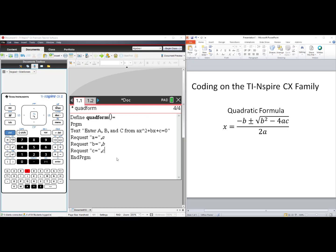Repeat this for B and C. So you should now have: Request A equals comma A, Request B equals comma B, Request C equals comma C, where A equals, B equals, and C equals are all inside quotes. Press Enter to get to our new line.